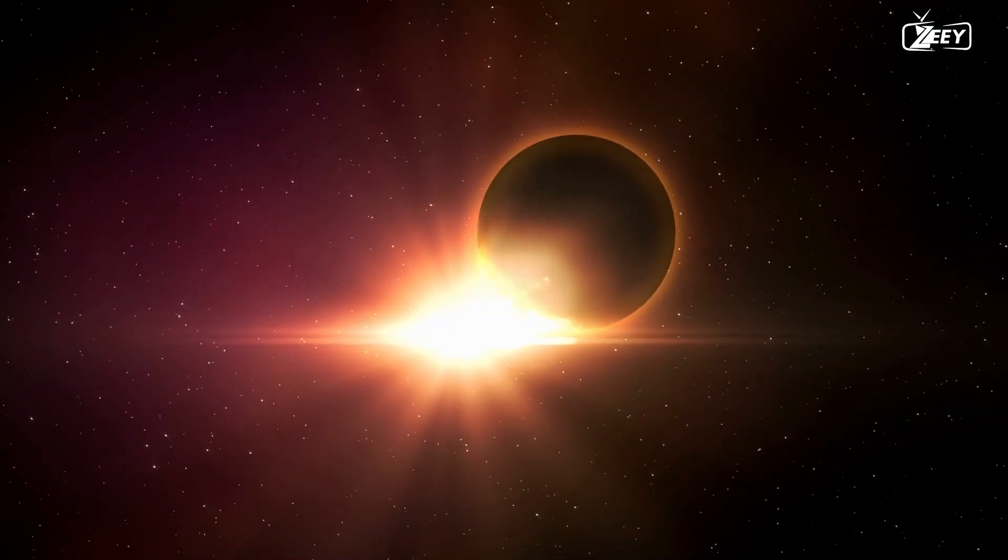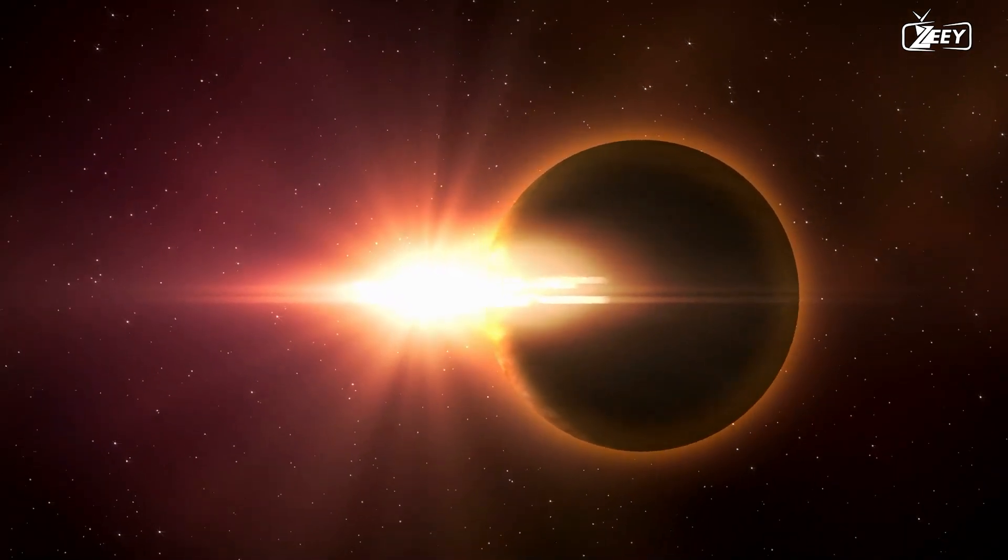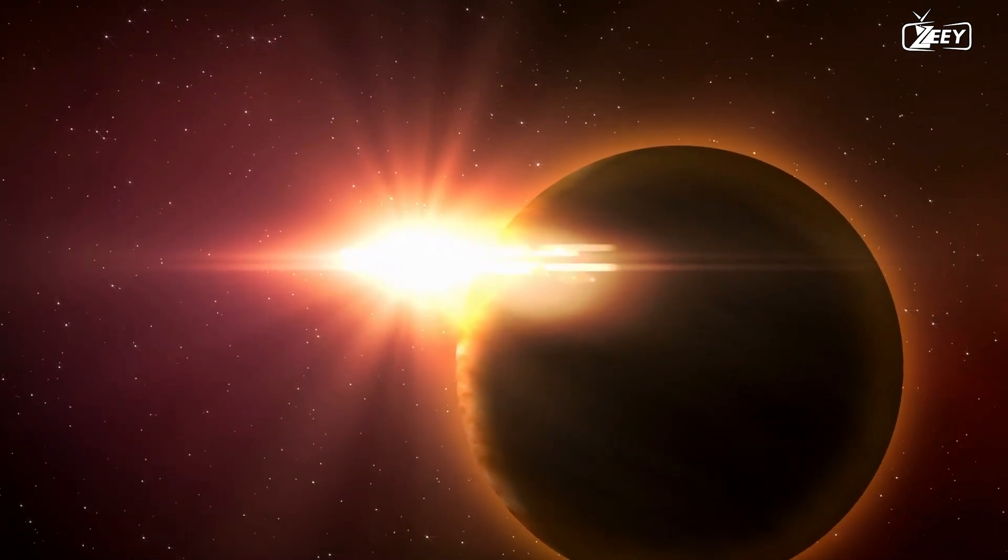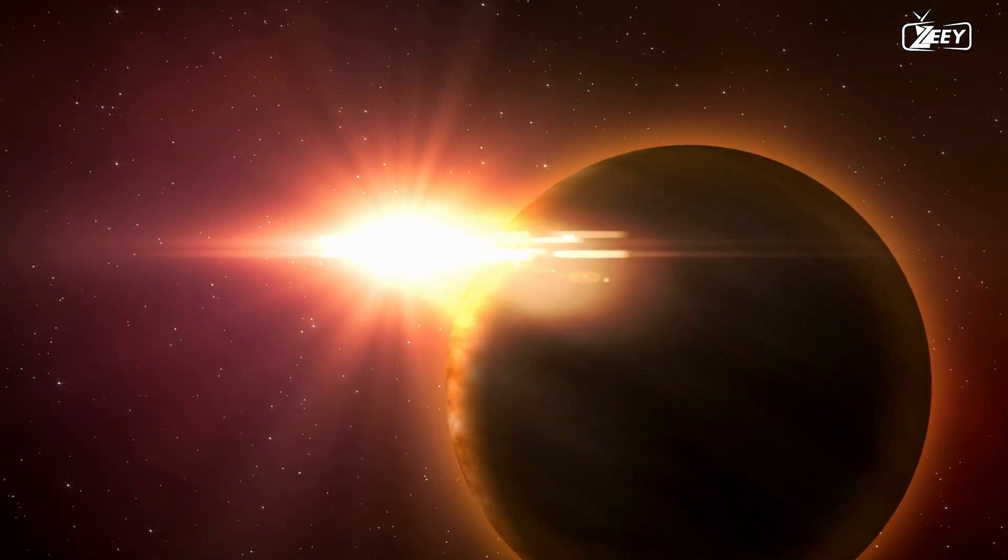Even though Kepler-22b is significantly closer to its host star than the Earth is to the sun, the brightness of the star is less than that of the sun. These two factors indicate that the planet's surface temperature is moderate, which is suitable for life as we know it.